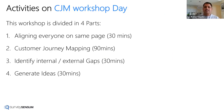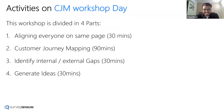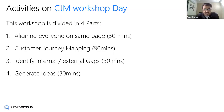The workshop is divided into four different parts. First: aligning everyone on the same page — it seems simple but is actually the most difficult task, and once done, everything falls into place. Second: doing the customer journey mapping. Third: identifying internal and external gaps. Fourth: generating ideas to delight customers. Suggested time allocations are 30 minutes, 90 minutes, 30 minutes, and 30 minutes. Today we'll try to complete it within about 70 minutes.